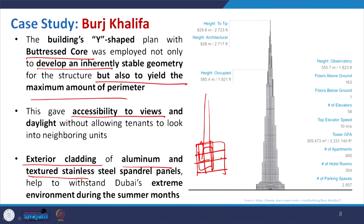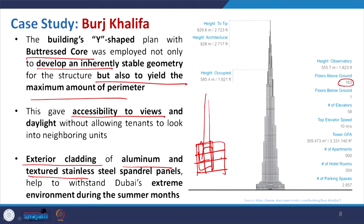The exterior cladding uses aluminium texture and stainless glass, which is found very efficient for the extreme weather conditions, especially in summer in Dubai. The building has 163 floors above ground and a total height of around 830 meters, though the occupied height is only up to 585 meters.